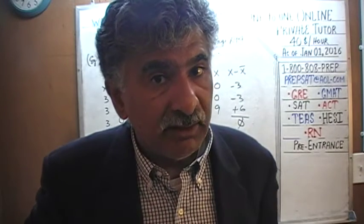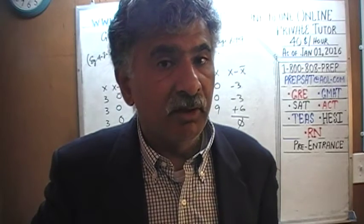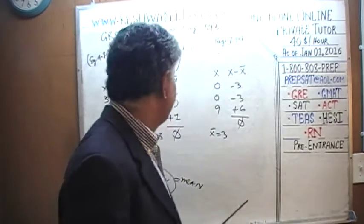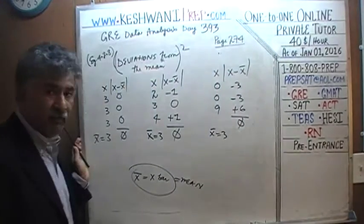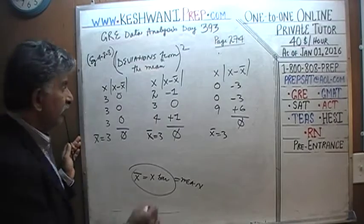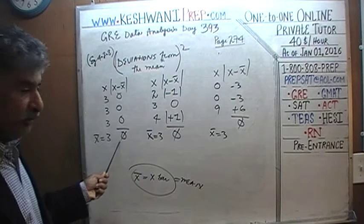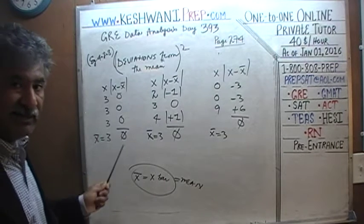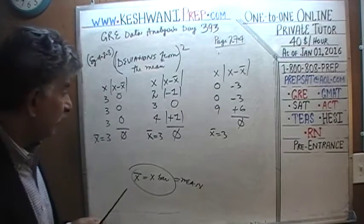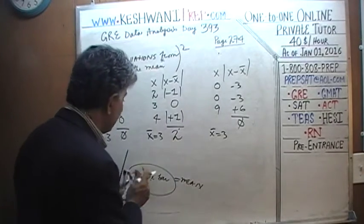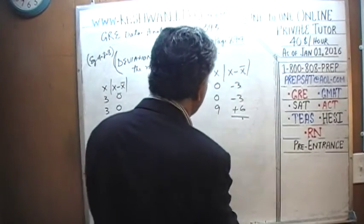The next question is: if the problem is that negative deviations cancel out positive deviations, why don't we just take the absolute value? That would solve the problem — the sum of the absolute values of deviations would be 0 for Town A (no deviation), 2 for Town B, and 12 for Town C.